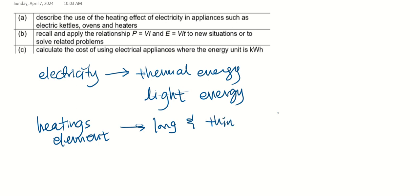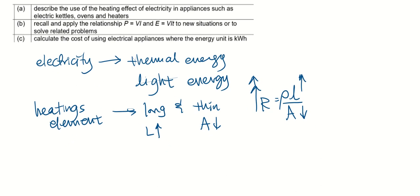Resistance actually depends on the resistivity of the object or material, followed by the length and area. So if I have something that is long and thin, that means my length is high and my cross-sectional area is low. If my length is high and my cross-sectional area is low, that means my resistance will be high.